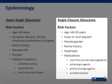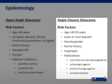Angle closure glaucoma is most common in people of Asian descent. Risk factors include an age greater than 40 or 50 years old, Asian or Inuit descent, female sex, a family history of angle closure glaucoma, hyperopia, certain medications such as over-the-counter decongestants, adrenergic agents, antipsychotics, antidepressants, and anticholinergic agents, and certain ocular conditions.